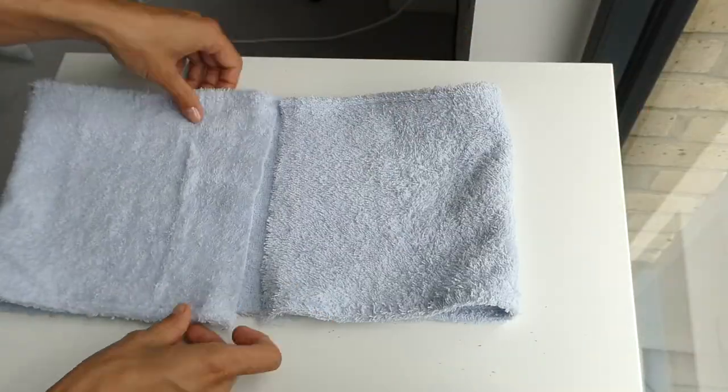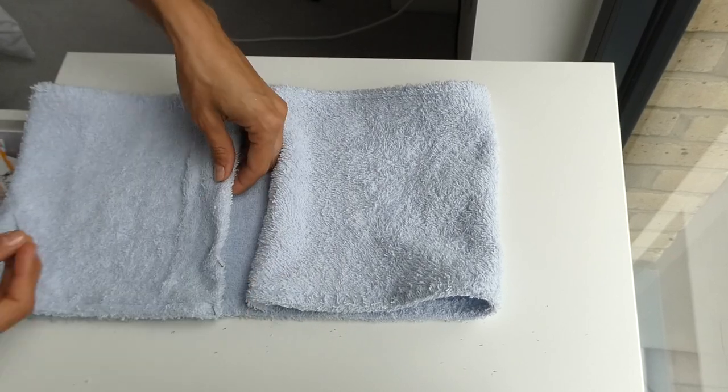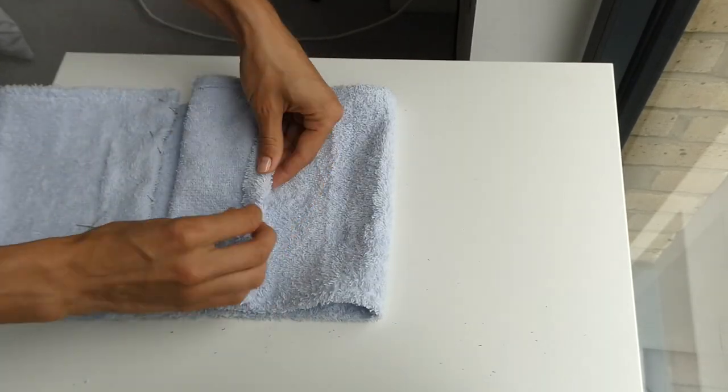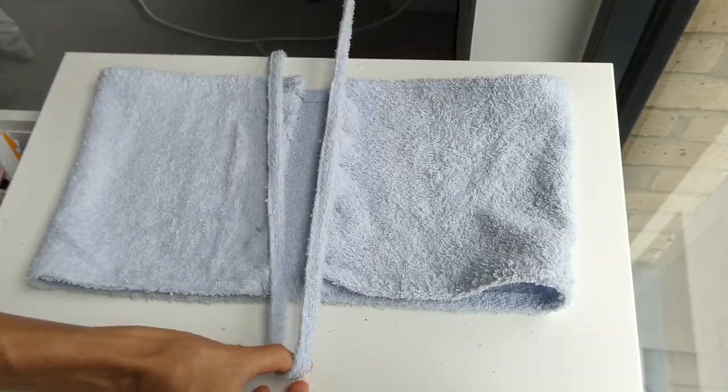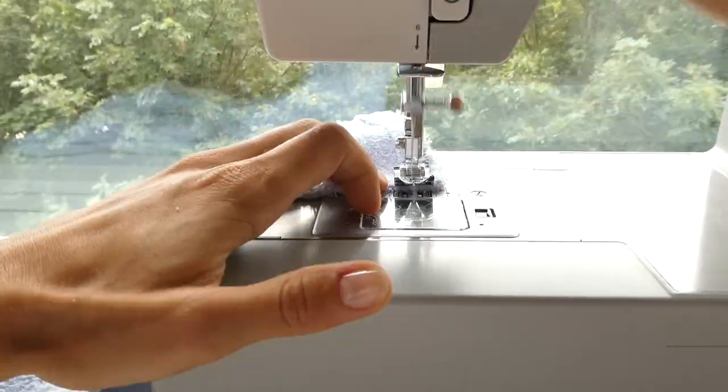Once that's all hemmed I'm ready to now fold over the shorter sides which is then going to create a channel to put my straps through. When sewing this part it's important that the channel you're creating is going to be wide enough to be able to slip the strap through.